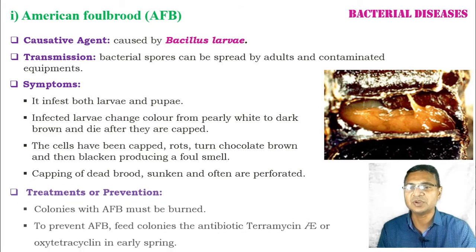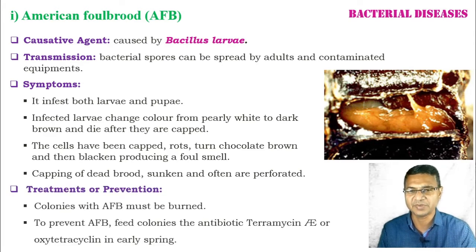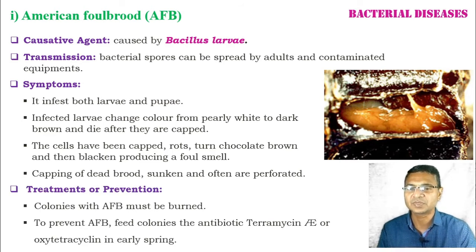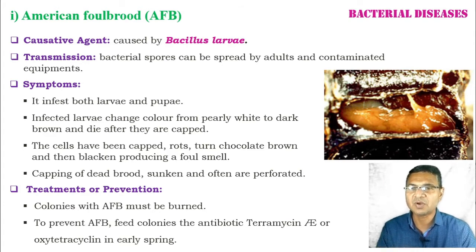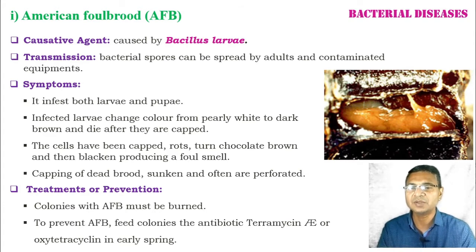For treatment or prevention: colonies infected with AFB must be burned. To prevent AFB, we must feed colonies antibiotics — that is, Terramycin or oxytetracycline — in early spring.